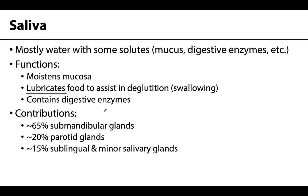Even though the parotid glands are quite large, it is actually the submandibular glands that produce the majority of the saliva within the oral cavity. People produce varying amounts of saliva dependent on many different factors — things like are you about to eat, are you ill, is there an infection in the mouth, are you a baby? Saliva can act as a fluid seal for suckling, so you often see babies with a very noticeable amount of saliva.